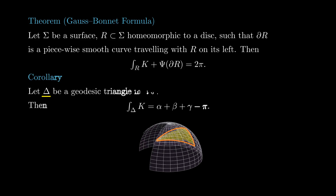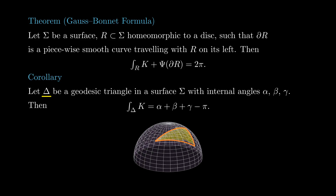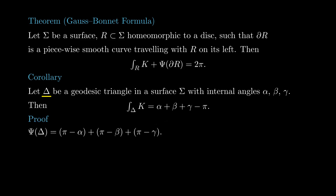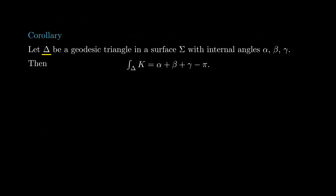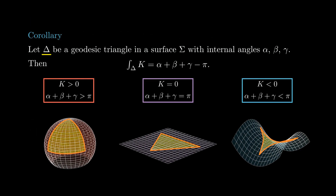A popular special case is when the region R is a triangle with geodesic sides. In that case, the geodesic curvature of its boundary is 3pi minus the sum of its internal angles. After rearranging, we get that the integral of the Gauss curvature over the triangle equals the sum of the internal angles minus pi. This means that in a surface of positive curvature, the sum of the angles of a triangle is greater than 180 degrees, so the triangles are fatter than in the Euclidean plane. And in a surface of negative curvature, the sum of the angles is less than 180 degrees, so the triangles are thinner.